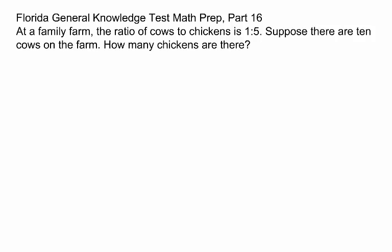At a family farm, the ratio of cows to chickens is 1 to 5. Suppose there are 10 cows on the farm. How many chickens are there?